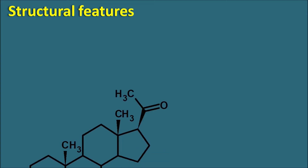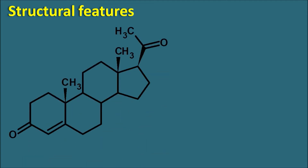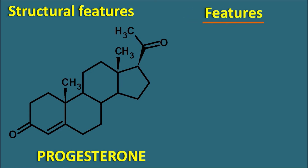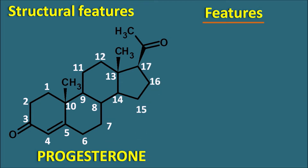Let us see the structural features. This is the ring system present in the progestogens, and one of the natural progestogens is progesterone. We can number the ring system: positions 1 through 19 cover the ring carbons, and then we can also find another side chain at positions 20 and 21.